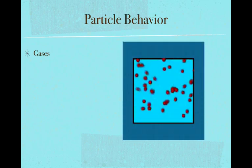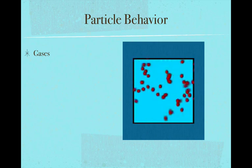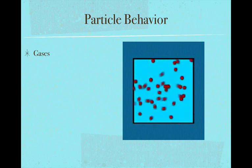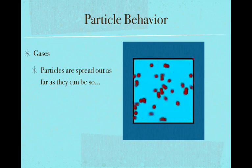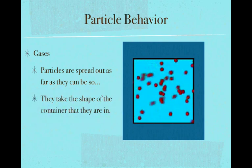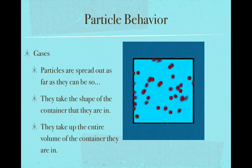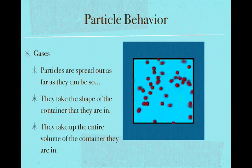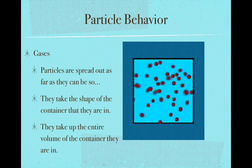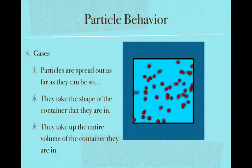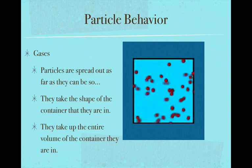Gases are quite different from solids and liquids. You can see the particles are zipping all over the place and there's space between them. The particles move around a lot and change position relative to one another, and unlike liquids, there is space between those particles — they spread out as far as they can go. They take the shape and volume of the entire container. If you compress the container, the gas particles still fill it but get a little closer together. The volume of a gas is not constant — you can change it by changing the pressure or the size of the container.